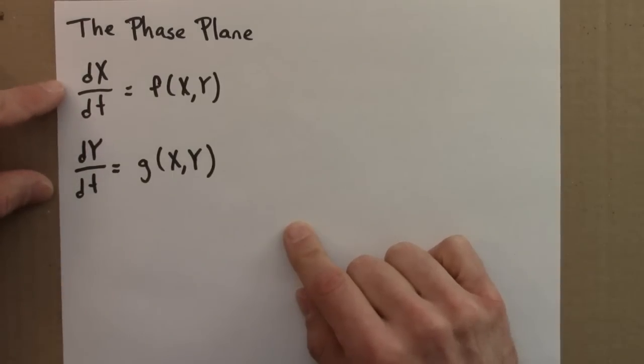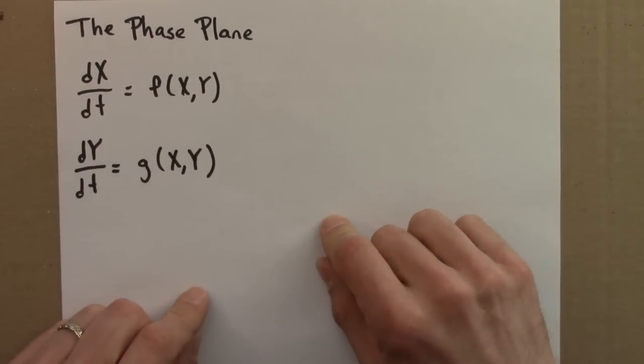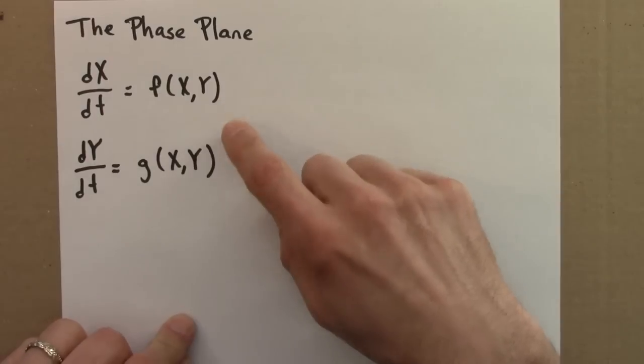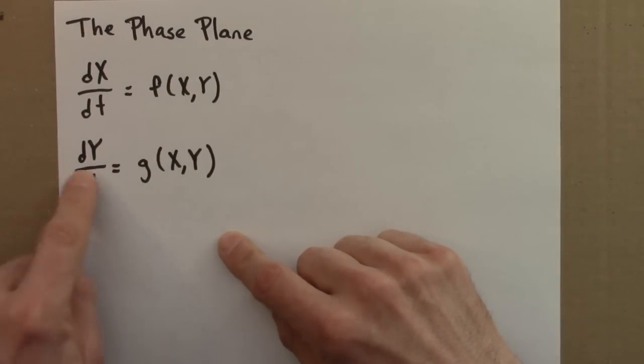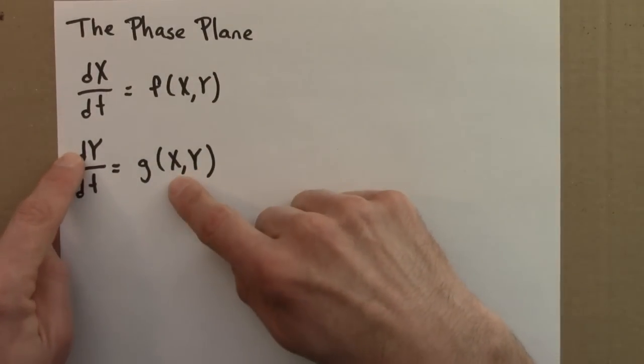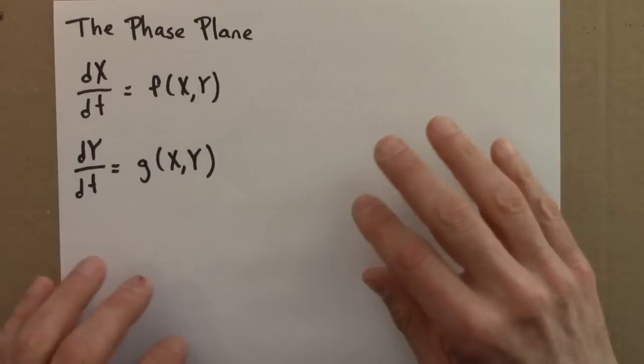It specifies how x and y change. But because it's a differential equation, it does so indirectly by telling us the rates of change, or the velocity of x and y, not directly giving the x and y values. The rate of change of x is a function of x and y. The rate of change of y is a function of x and y. These could be different functions. And note that x depends on y, in general y depends on x, so we would say that these two differential equations are coupled because they depend on each other.